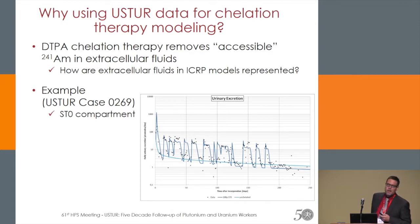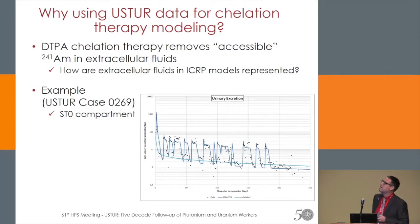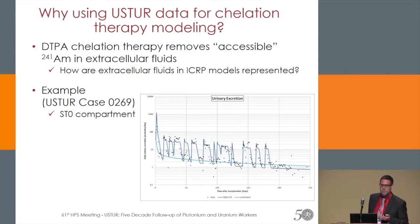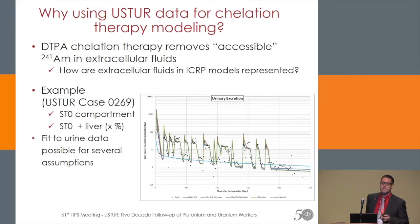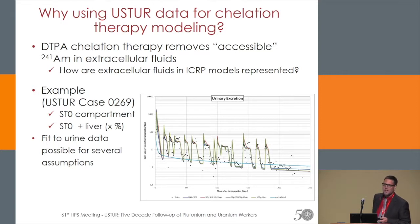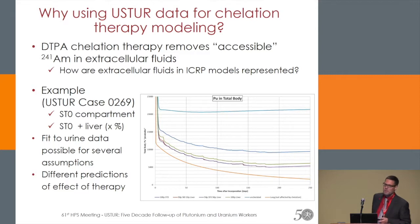We already heard today that chelation effectively removes liver content. So why couldn't we assume that some of the chelation takes place in liver? I show some models which add a chelation in the liver compartment to some percentage, and you see that all of the models are able to provide a good fit to the urinary data. So the question is, which model do you want to choose? If you look at the prediction of the models for the total body content, you see that they are strongly differing.